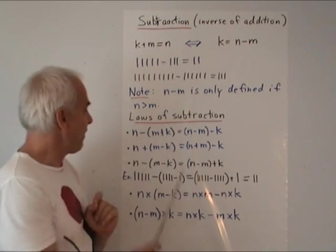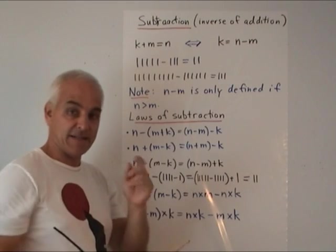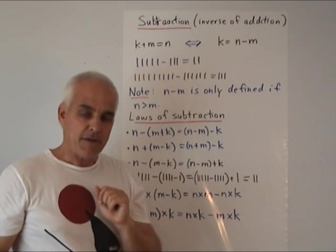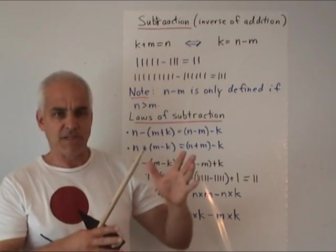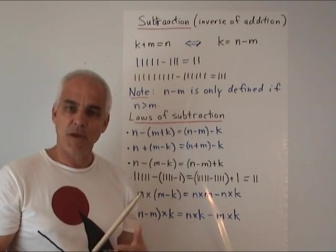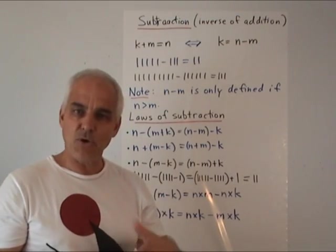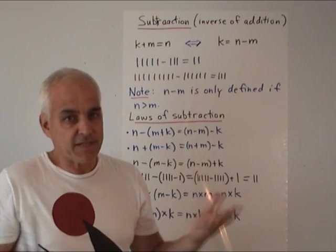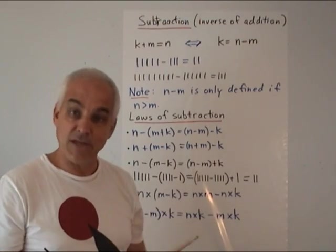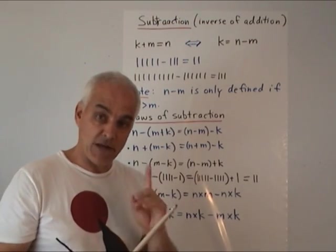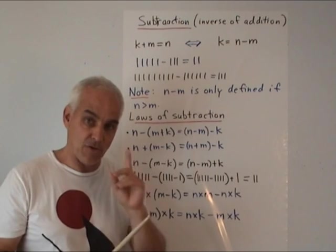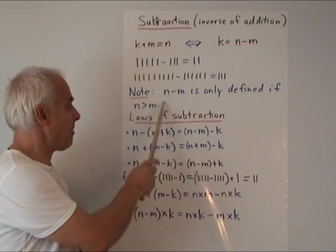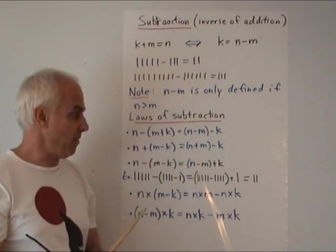It's important to note that N minus M is only defined if N is bigger than M. If N equals M or N is less than M, then it's not defined. You might say, can't we subtract four from four? We could naively, but we don't have a name for zero yet, so we don't have a symbol for that. We prefer not to consider that case yet — only if N is bigger than M can we define N minus M.